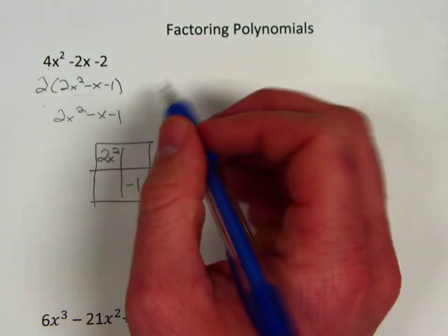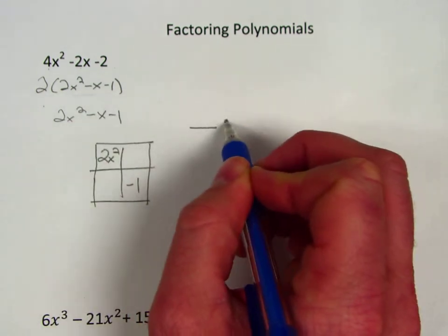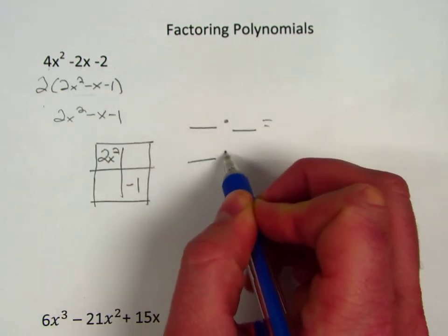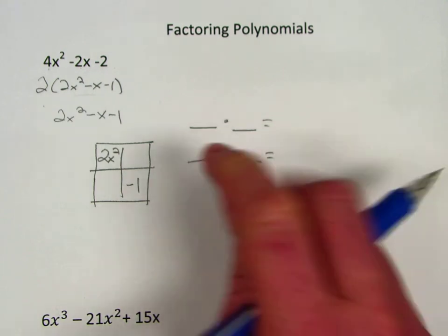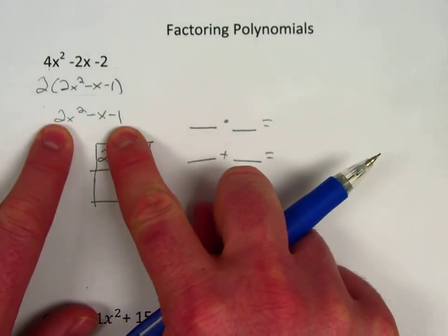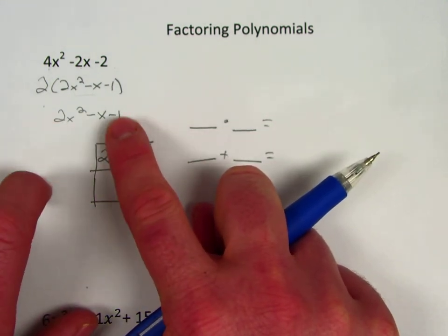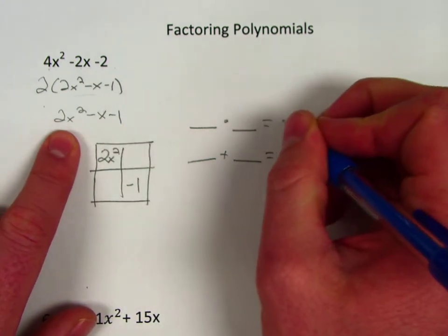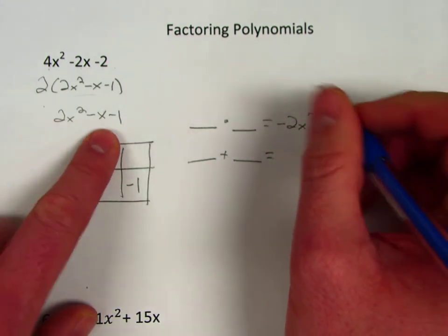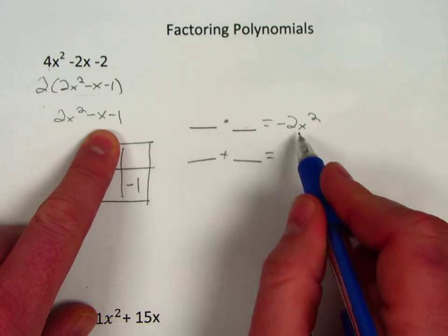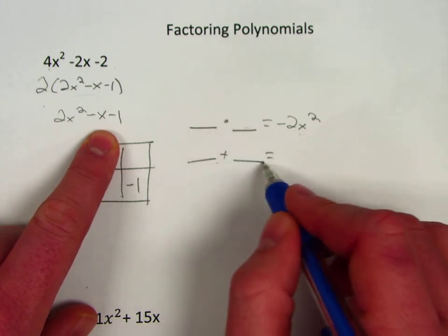And I'm looking for two terms here that when I multiply them they give me a negative 2x², and I get that by multiplying that last term times that first term and it gives me negative 2x².